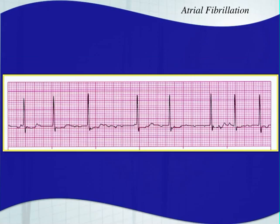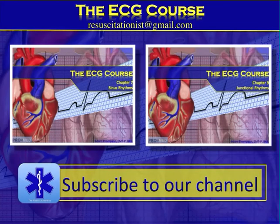Here's AFib again — this one's a little bit slower, about eight beats counted — that's very controlled. We don't have any clearly identified P waves, it's irregularly irregular and it's narrow — we have to call it AFib. That is it for this lesson. If you want to go back and look over sinus rhythms again, click on the left image and it'll take you back to chapter 7 on sinus rhythms. If you're ready to move on, chapter 9 is going to start talking about junctional rhythms.